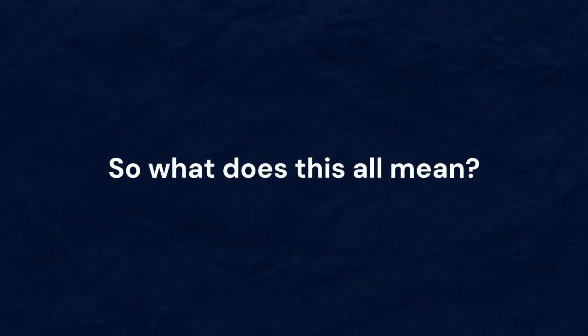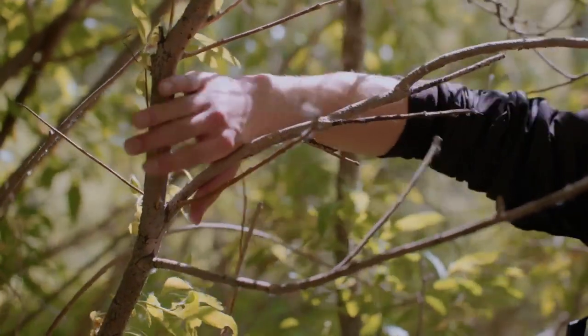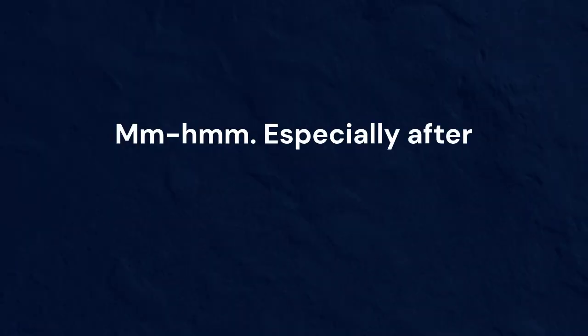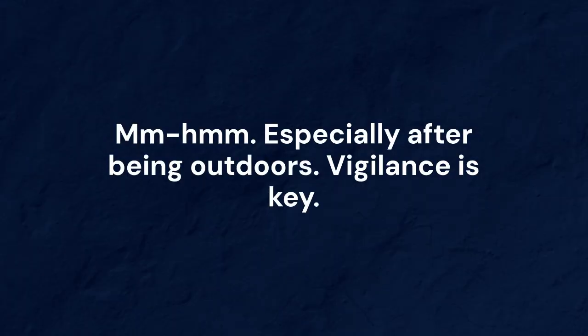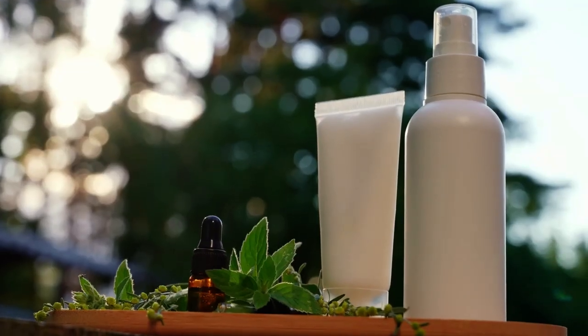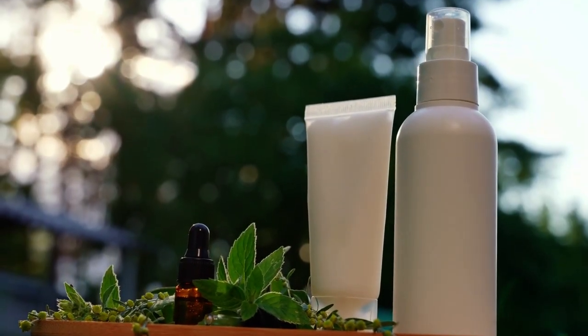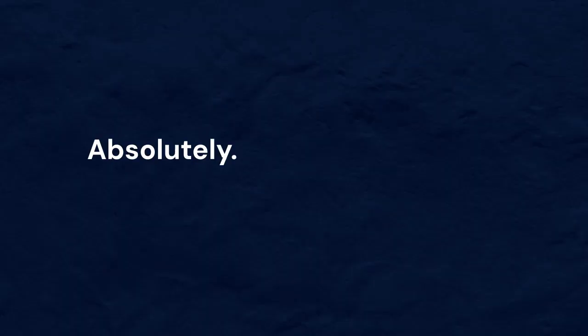So what does this all mean? Wrapping it up. If you're in Fleet or similar areas with woods and parks, you've got to be aware, especially after being outdoors. Vigilance is key. And prevention. The guide stresses simple things like long sleeves, checking for ticks, maybe using repellent with DEET. Avoiding the bite is always the best strategy.